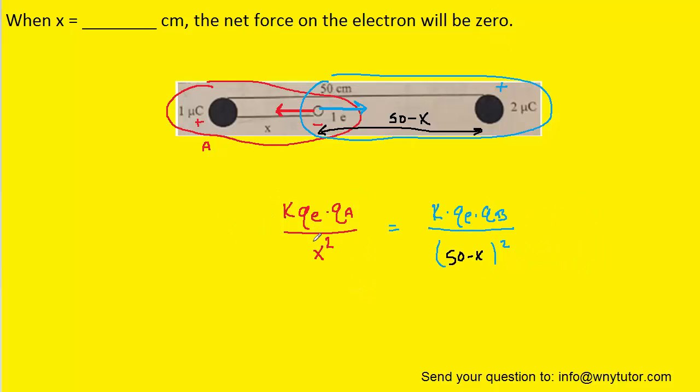Now, our goal is to solve for x, and what we'll notice first is that the term KQE appears on both sides of the equation. So, in essence, we can divide both sides by KQE, which will eliminate it from the equation.